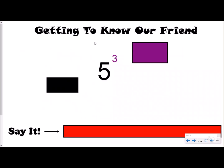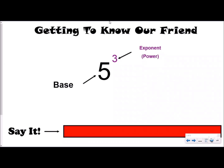Let's get to know our friend here. We have this big number and then we see this tiny little number up in the sky. This big number is called the base — it's the number that we are going to be multiplying, the number you're going to see repeatedly multiplied. The top number is called the exponent, and sometimes people refer to it as the power, but really the power is all of it together. The base number tells us what number we're going to be multiplying, which is five.